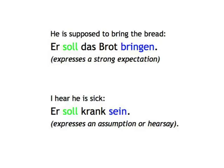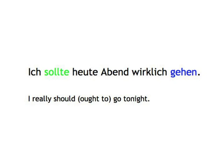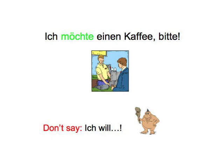Sollen is a bit more complicated, as it can mean both 'to be supposed to' — as in 'he's supposed to bring the bread': Er soll das Brot bringen, which expresses a strong expectation — but it can also mean 'to hear that / supposedly', as in 'I hear he's sick': Er soll krank sein, which expresses an assumption or hearsay. Very often sollen is also used in its subjunctive form sollte, as in the English 'should' or 'ought to', expressing a duty that may or may not be fulfilled — as in 'I really should go tonight': Ich sollte heute Abend wirklich gehen.